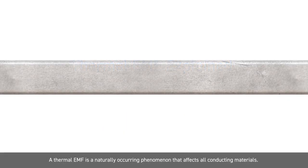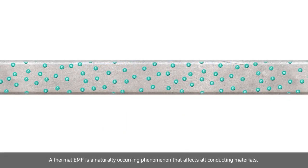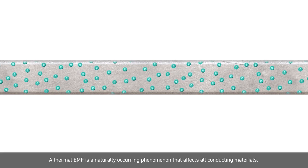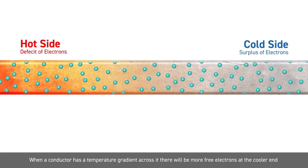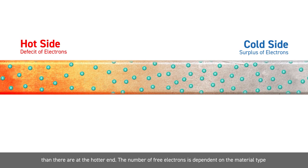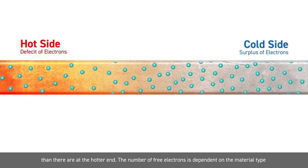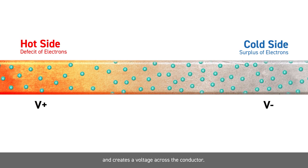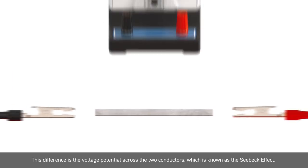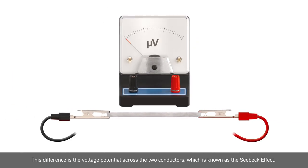A thermal EMF is a naturally occurring phenomenon that affects all conducting materials. When a conductor has a temperature gradient across it, there will be more free electrons at the cooler end than at the hotter end. The number of free electrons is dependent on material type and creates a voltage across the conductor. This difference in voltage potential across two conductors is known as the Seebeck effect.